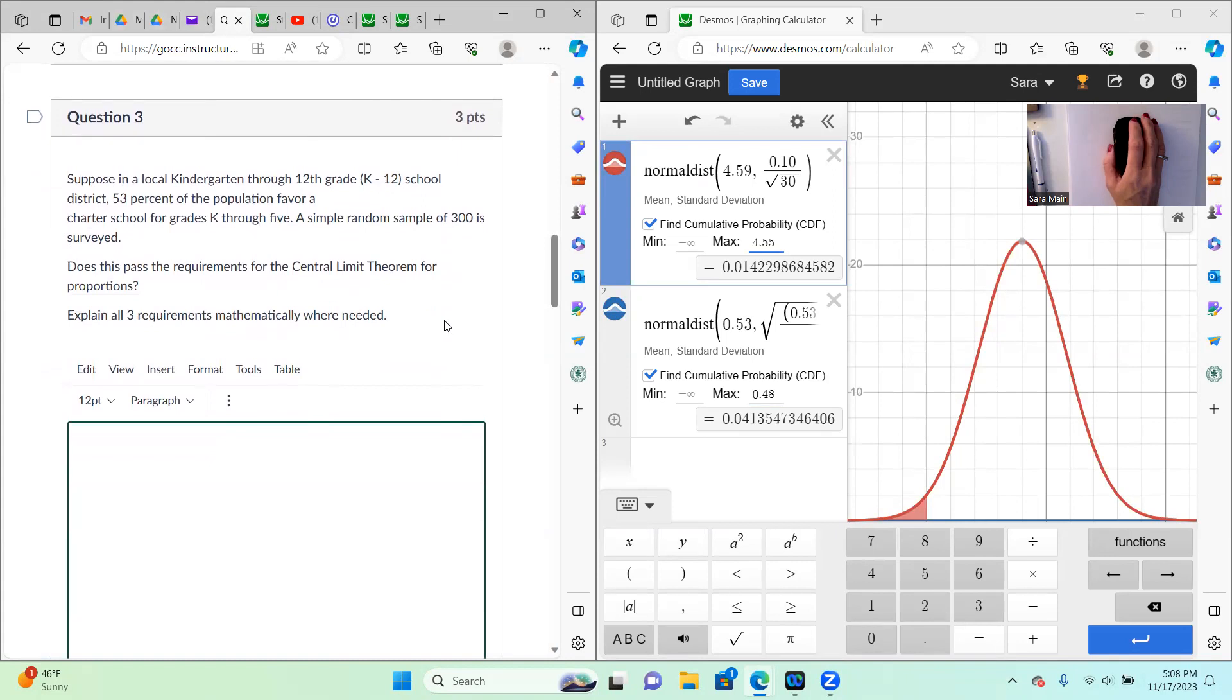Okay, question three is looking at a scenario where 53% of the population favor a charter school, they do a sample of 300 surveyed, does this pass the requirements? I'm going to share my screen here and show you how I would do this, what I expect you to do on paper.